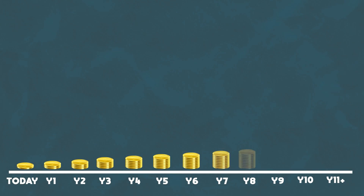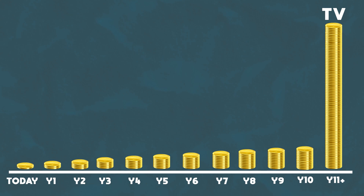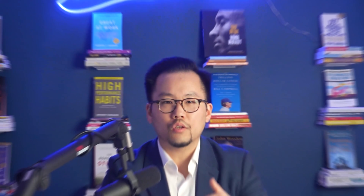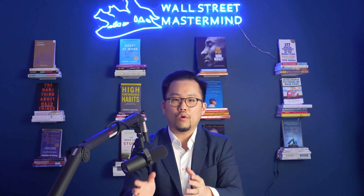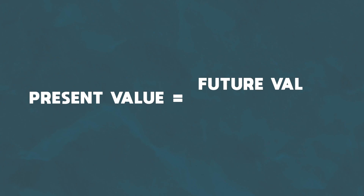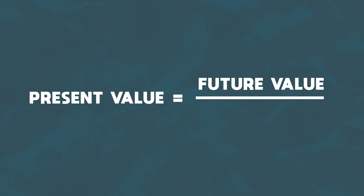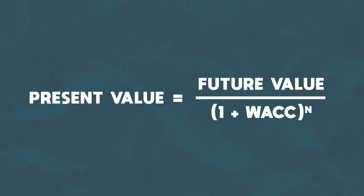So you have your free cash flow for the first five to ten years projected out, and you have your terminal value representing all future cash flows beyond that initial projection period. All you have to do is discount all these cash flows back to present value. For that you can use the present value formula, which states that present value equals the future value divided by the quantity one plus the discount rate, raised to the number of periods.